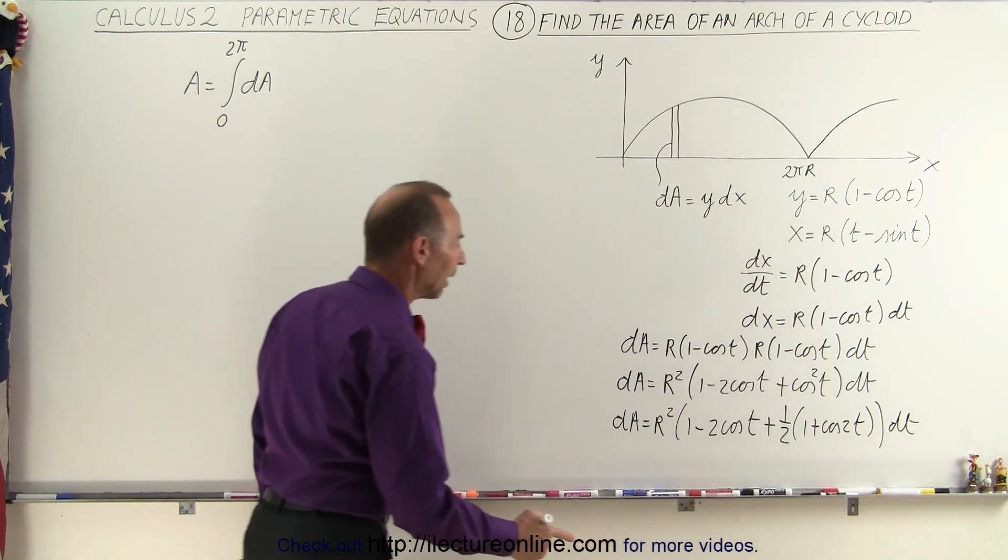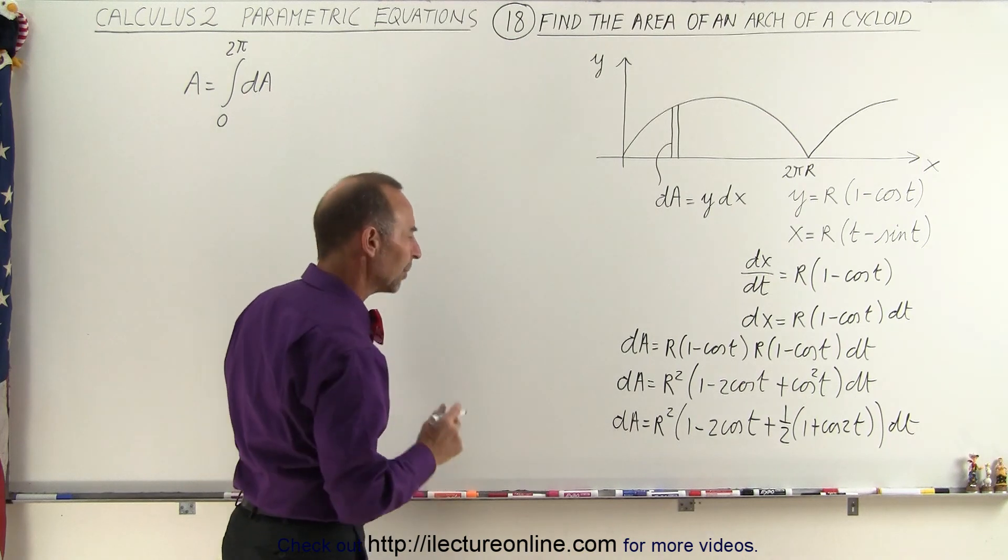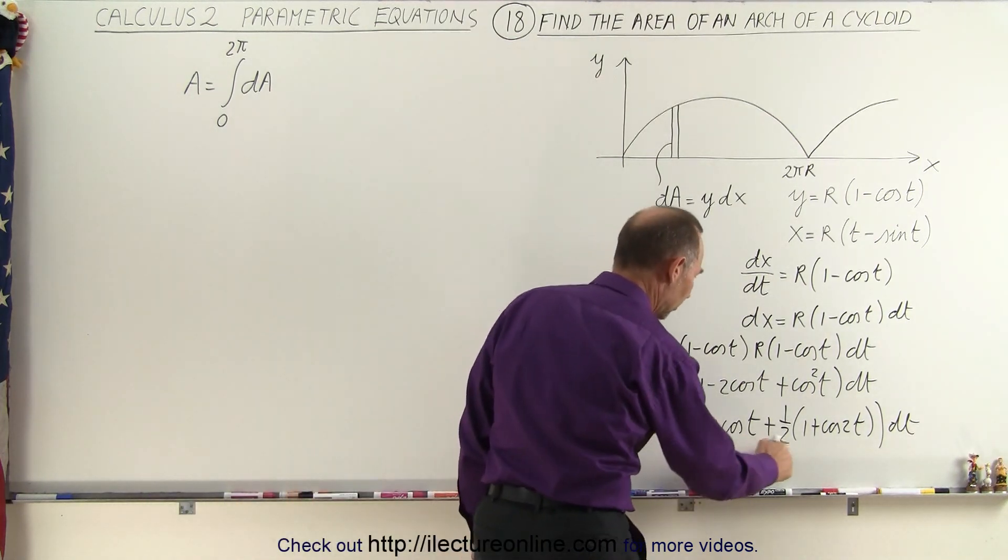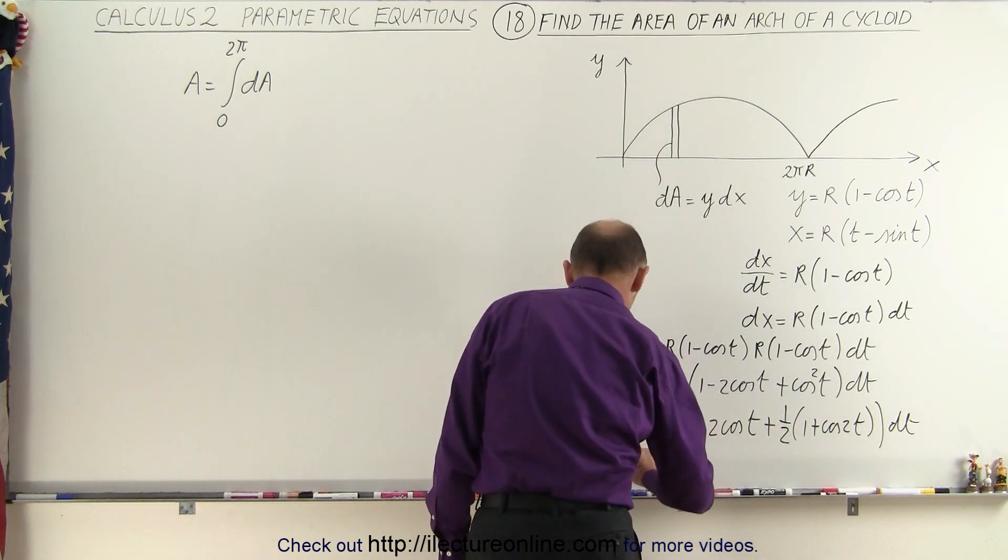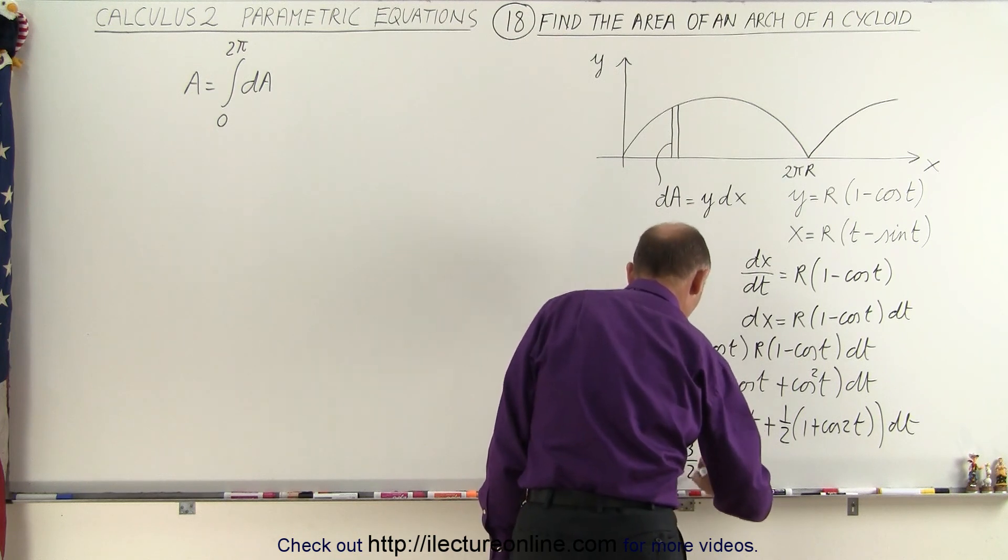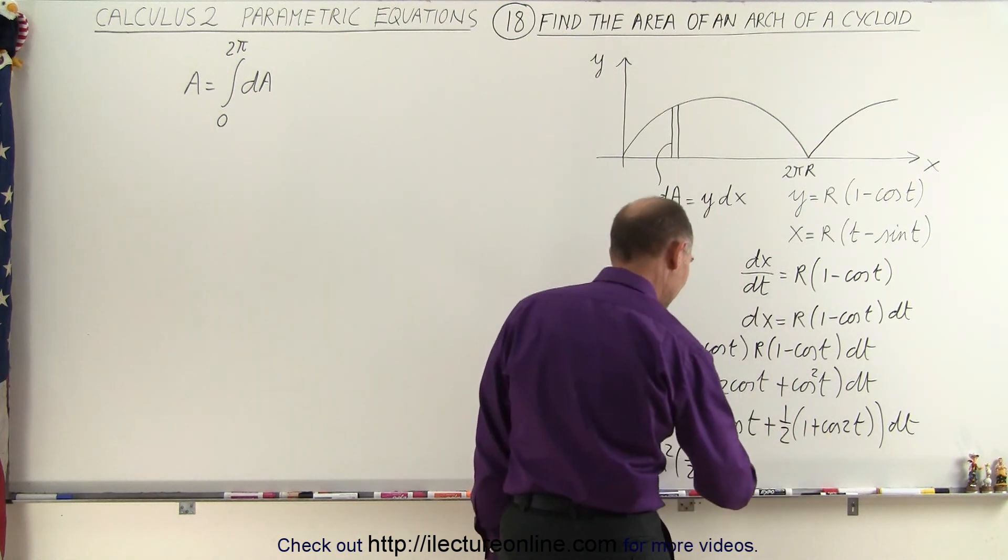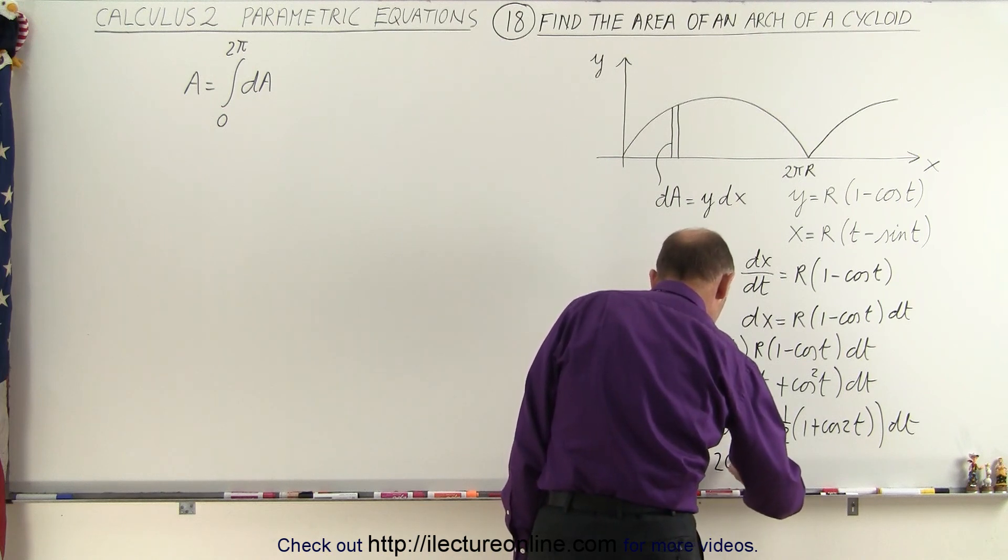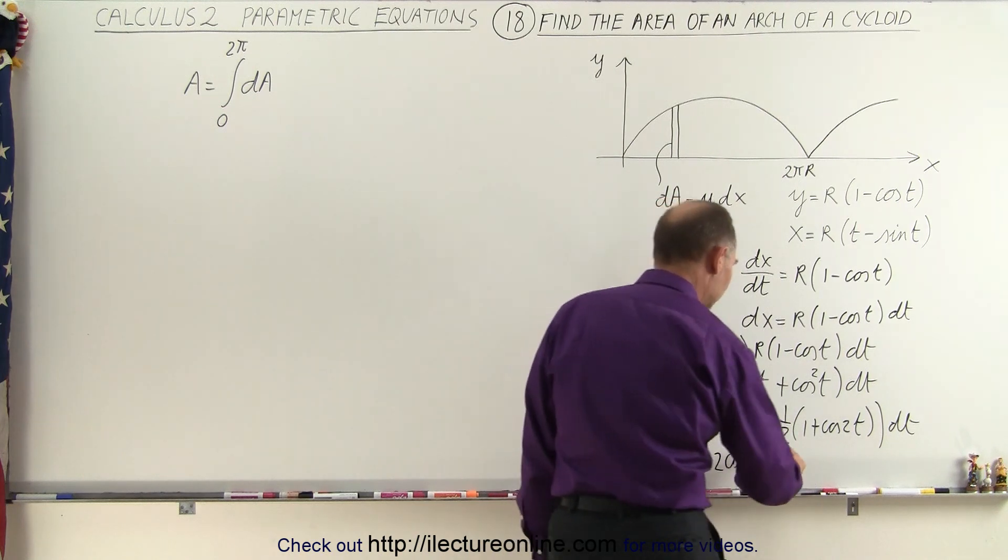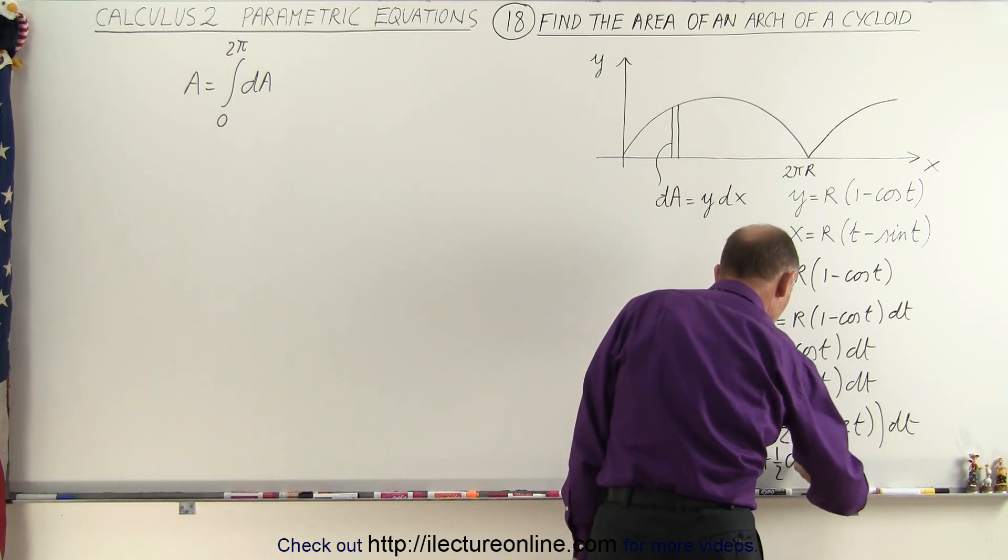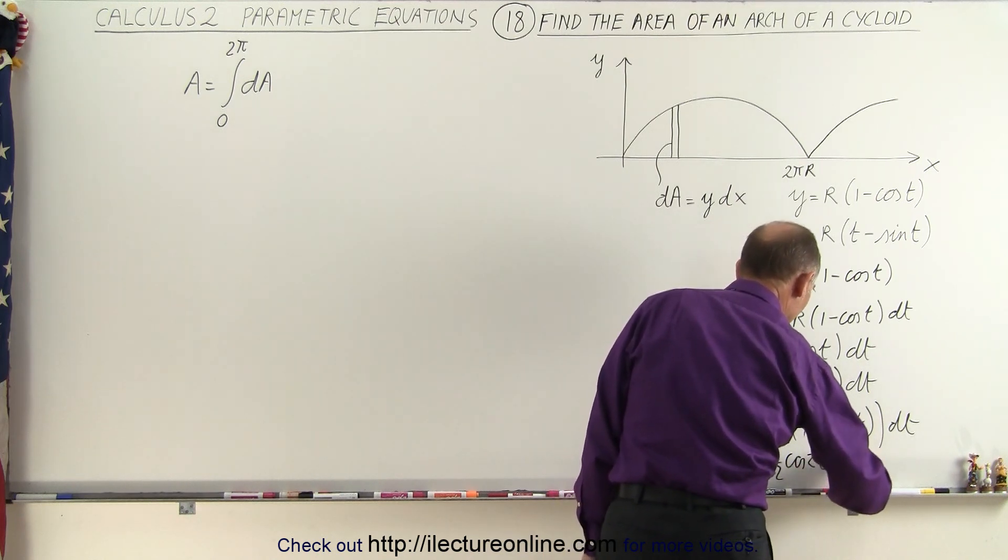Now we're ready to go ahead and plug that in here. Maybe I'll simplify it one more time. We have one plus a half so we can write that dA is equal to r squared times 3 halves, because one plus a half is 3 halves, then we have minus 2 times the cosine of t, and plus a half times this so plus one half times the cosine of 2t times dt.